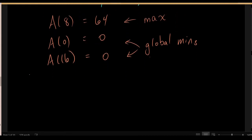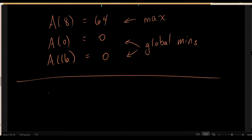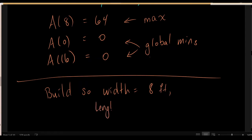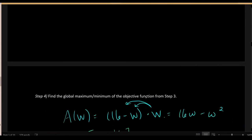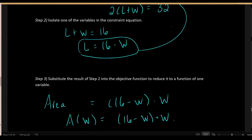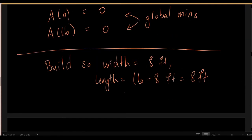The easiest way to find which gives the global maximum is to plug all three values into A(W). A(8) equals (16 minus 8) times 8, which equals 64. A(0) equals zero, and A(16) also equals zero. So the global max is at W equals 8, and the two endpoints correspond to a global minimum. To maximize area, build the garden bed so the width is 8 feet, the length is 16 minus 8 equals 8 feet — a square garden, 8 by 8 feet. This uses all the lumber for a perimeter of exactly 32 feet and gives the largest possible area of 64 square feet.